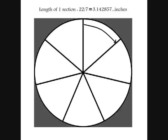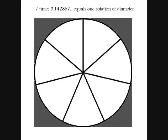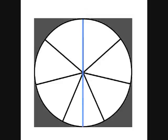And it also follows that seven times that amount, seven times the amount of one section equals one full rotation of the diameter. So, if you had the diameter starting, as shown with the blue line.